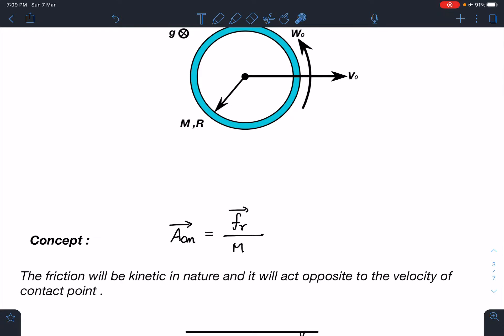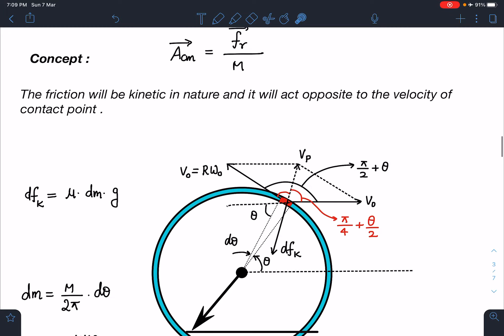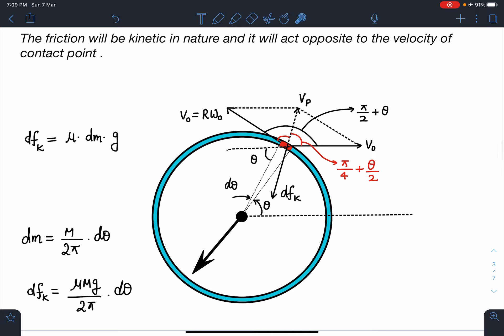Here I am drawing this ring. The ring is having radius of R. At any time t, let us say at an angle of θ, I am taking this element which is having angle of dθ.